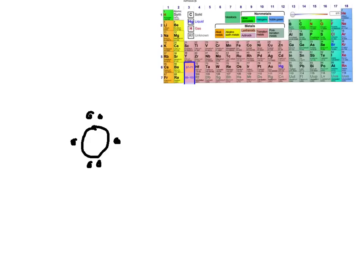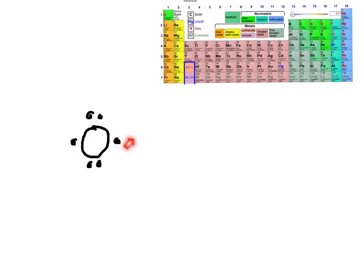Let's try this with oxygen. Oxygen by itself is also not very stable. It's in group 16, so it has two paired electrons and two that are unpaired. It needs to share an electron here and here to be stable.